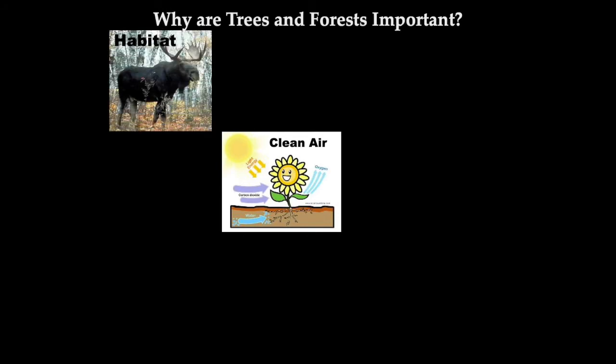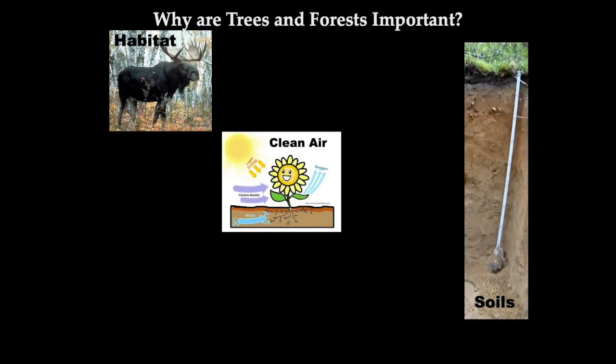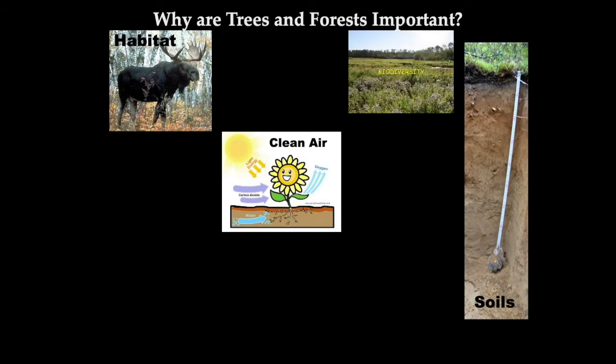The forest is also a place for animals to live — it provides vital habitat. Trees hold the soil in place, and roots help stop erosion from wind and rain. There's also biodiversity — a huge variety of plants and trees grow in the forest. Bio means life, diversity means variety, so biodiversity means the variety and complexity of all living things and the way they interact within a forest.